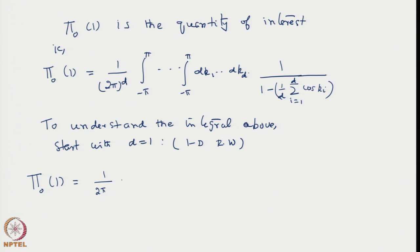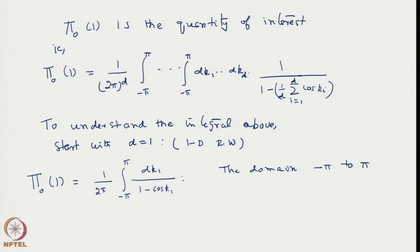If you put d=1, this formalism tells that π₀(1) for d=1 will be (1/2π) times the integral from -π to π of dk_1, with only one variable, giving 1/(1-cos(k_1)). So we are looking at the function 1/(1-cos(k_1)) integrated over the domain -π to π, which includes 0.